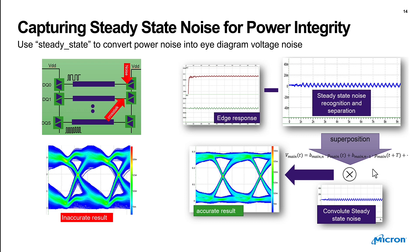Another recent feature in Stati is the ability to capture steady state noise and add voltage noise into the simulation. Previously, having voltage noise would produce incorrect results. Now, if you enable the steady state option, Stati performs a steady state edge response — for example with edge mode four, it does an extra edge characterization — looks at the steady state response, removes the voltage noise from other edge responses, and then properly convolves it in at the end to reflect the effect of voltage noise in your eye diagram.